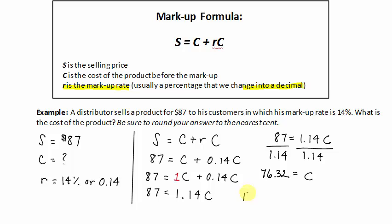What does this mean? This means the cost is $76.32. Now recall that the selling price is always more than the cost of the product before the markup. So it makes sense why the cost is going to be less than the selling price of $87. Thank you.